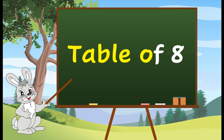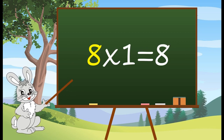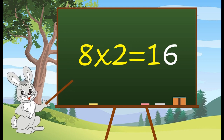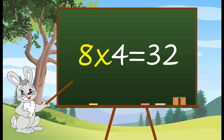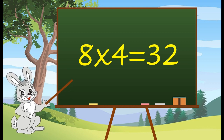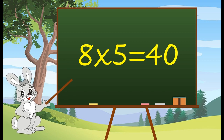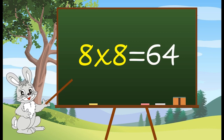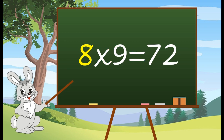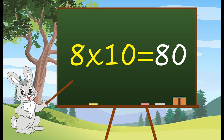Table of 8. 8 1's are 8. 8 2's are 16. 8 3's are 24. 8 4's are 32. 8 5's are 40. 8 6's are 48. 8 7's are 56. 8 8's are 64. 8 9's are 72. 8 10's are 80.